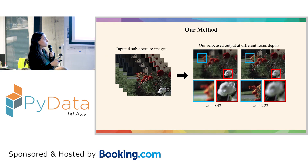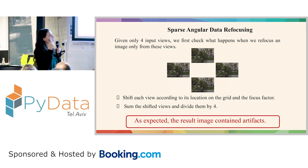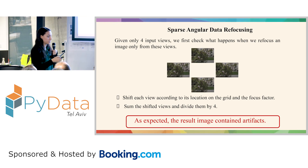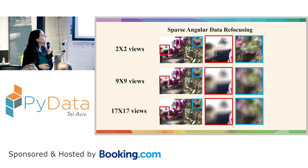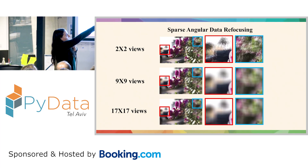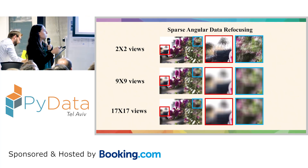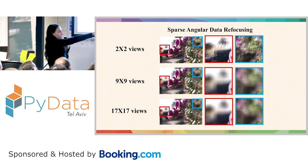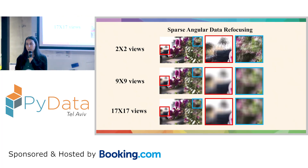Let's talk about our method. We took four sub-aperture images, which is considered very sparse, and generated one refocused image at each focus step. We first checked what happens when we try to refocus using the basic algorithm: we took each view, shifted it, summed them, and divided by four — and the results were bad. You can really see the ghosting artifacts near the tree and the leaves. When we increase the angular resolution to 17 by 17 views, the artifacts are almost gone and the result looks much smoother and more continuous.